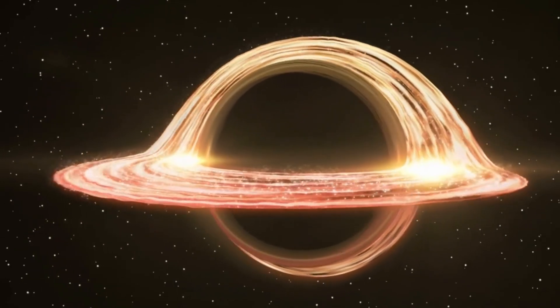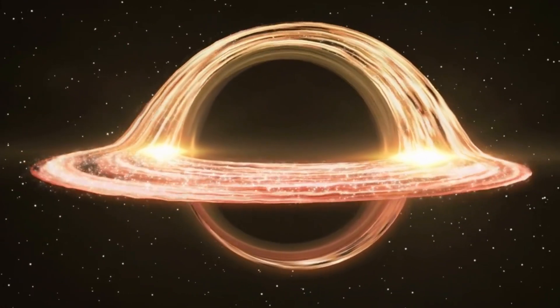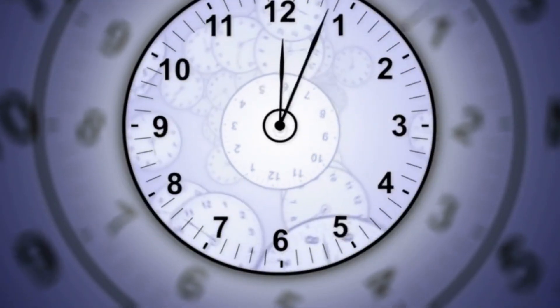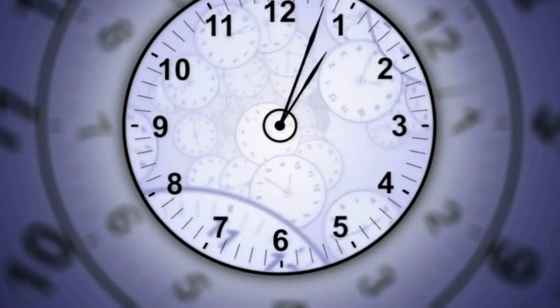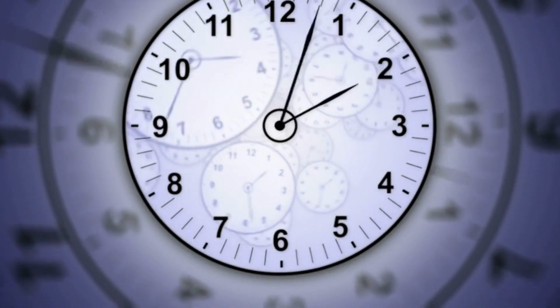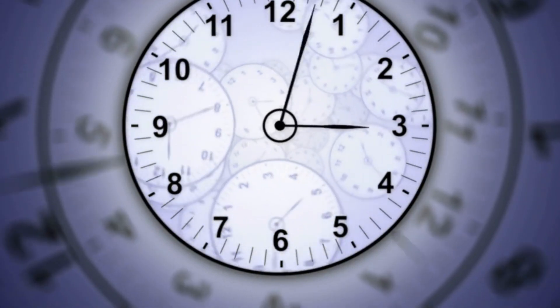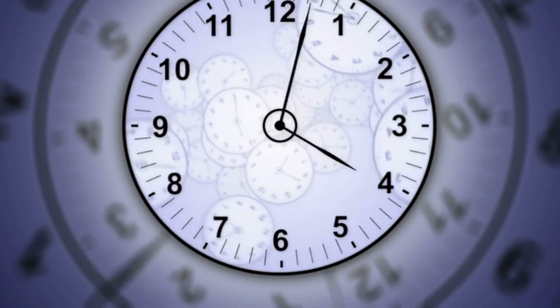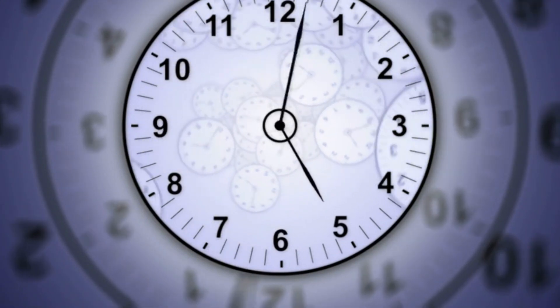A rotating black hole is more complicated than a non-rotating one, because it not only warps space, but also drags time along with it. This phenomenon is called frame dragging, and it means that an observer near a rotating black hole will feel a force that tries to make them rotate as well.